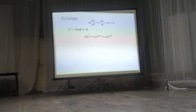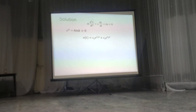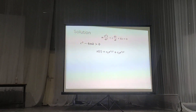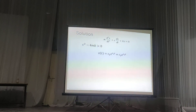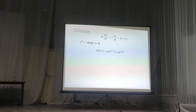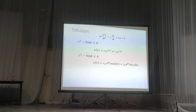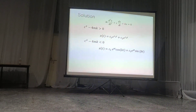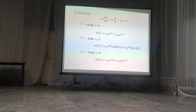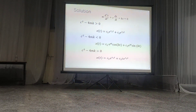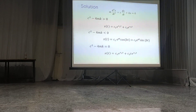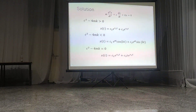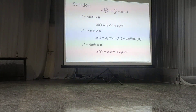When c² minus 4mk is positive, that is one possible solution — actually a two-parameter family of solutions. When it is negative, the solution involves a trigonometric function. The critical damping occurs in one case; in the first case over-damping occurs, and in the last case under-damping occurs.